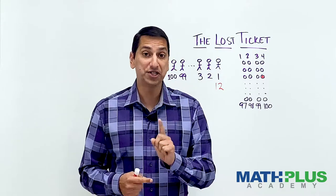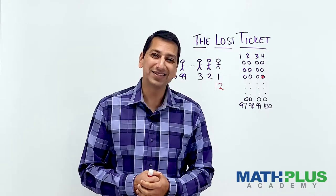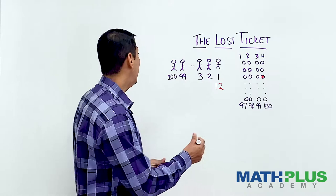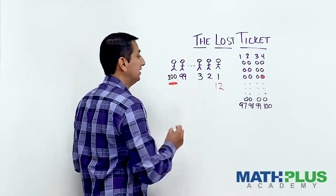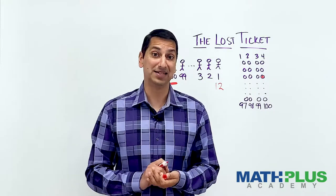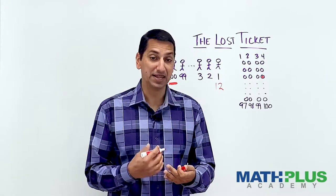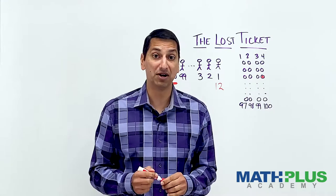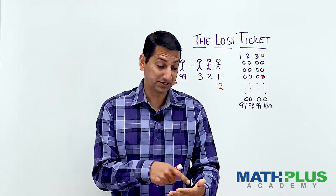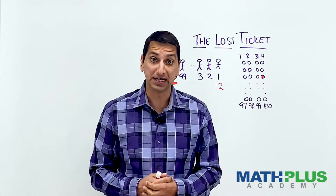And the question is, what is the likelihood that the last person gets to sit in their assigned seat? So when they read their ticket and they board the plane, 99 people are already on. What is the likelihood that their seat is empty and they can actually go sit in it?